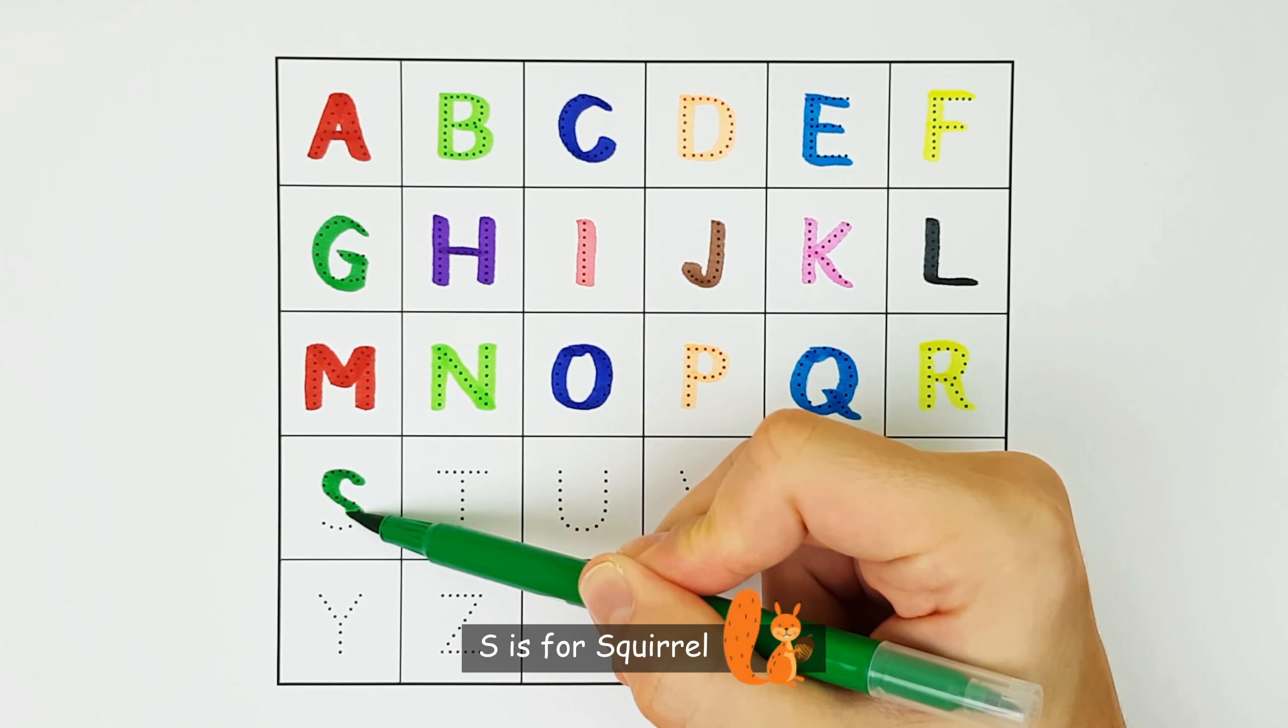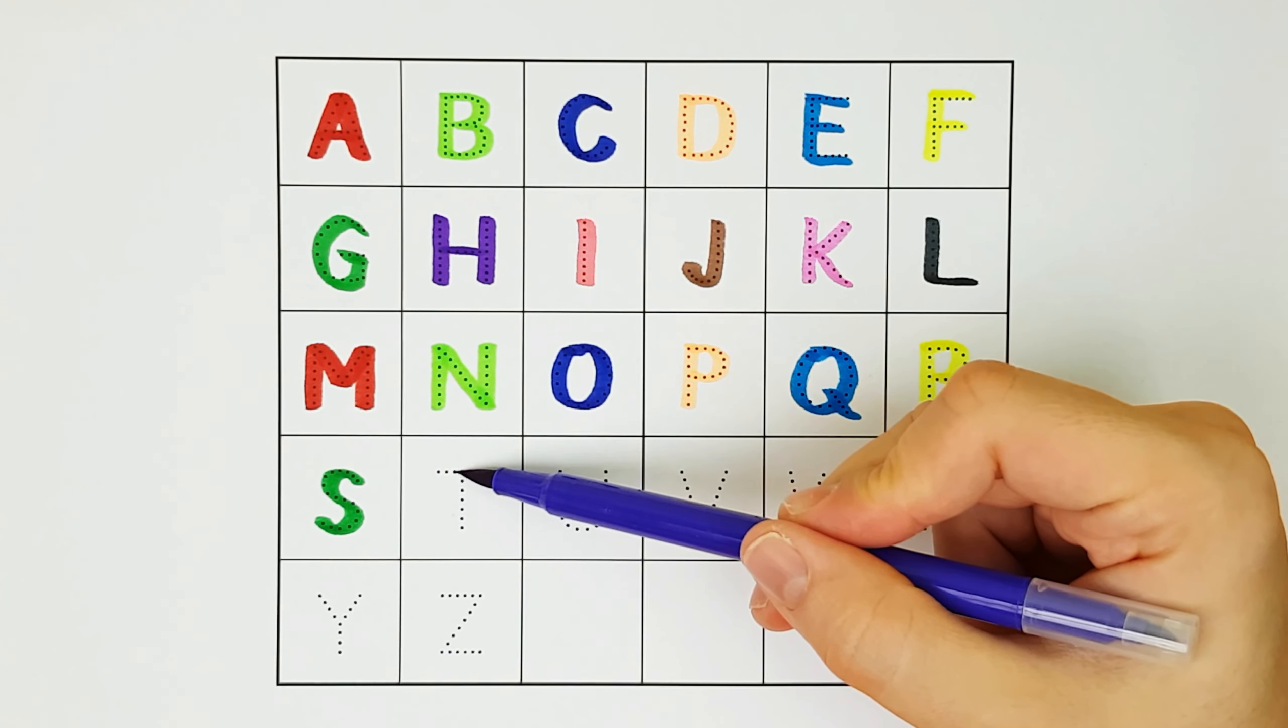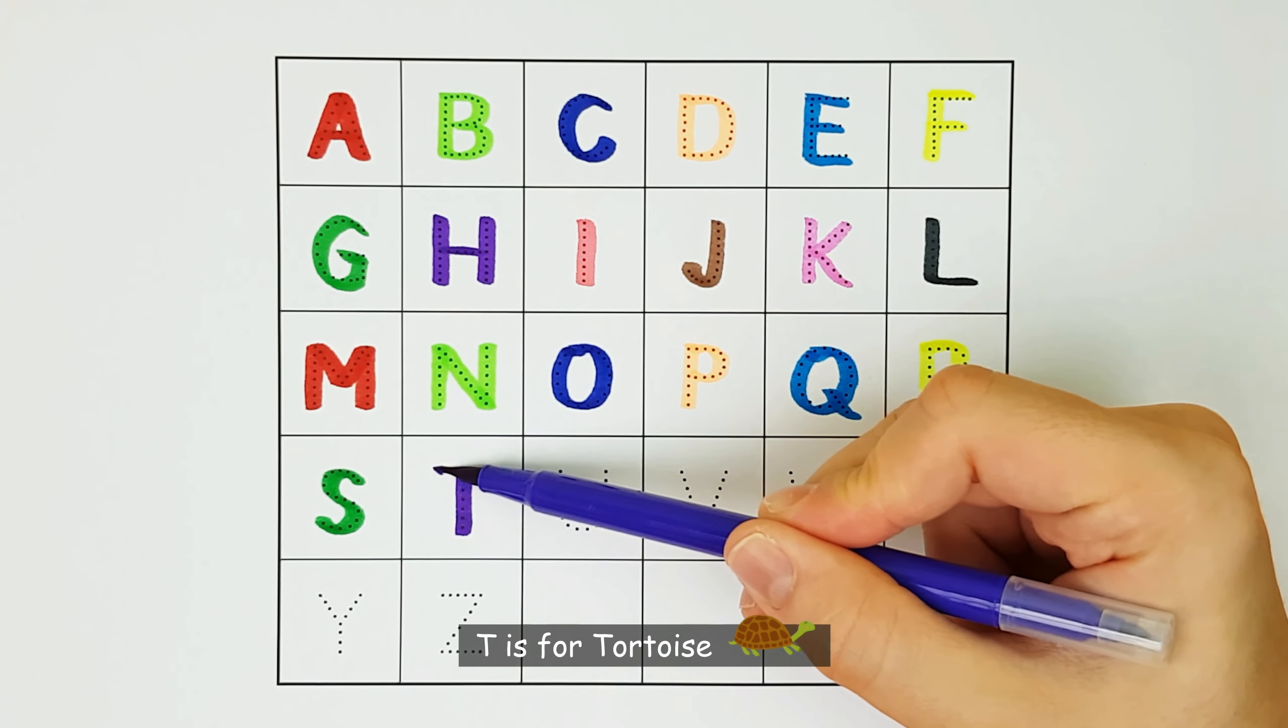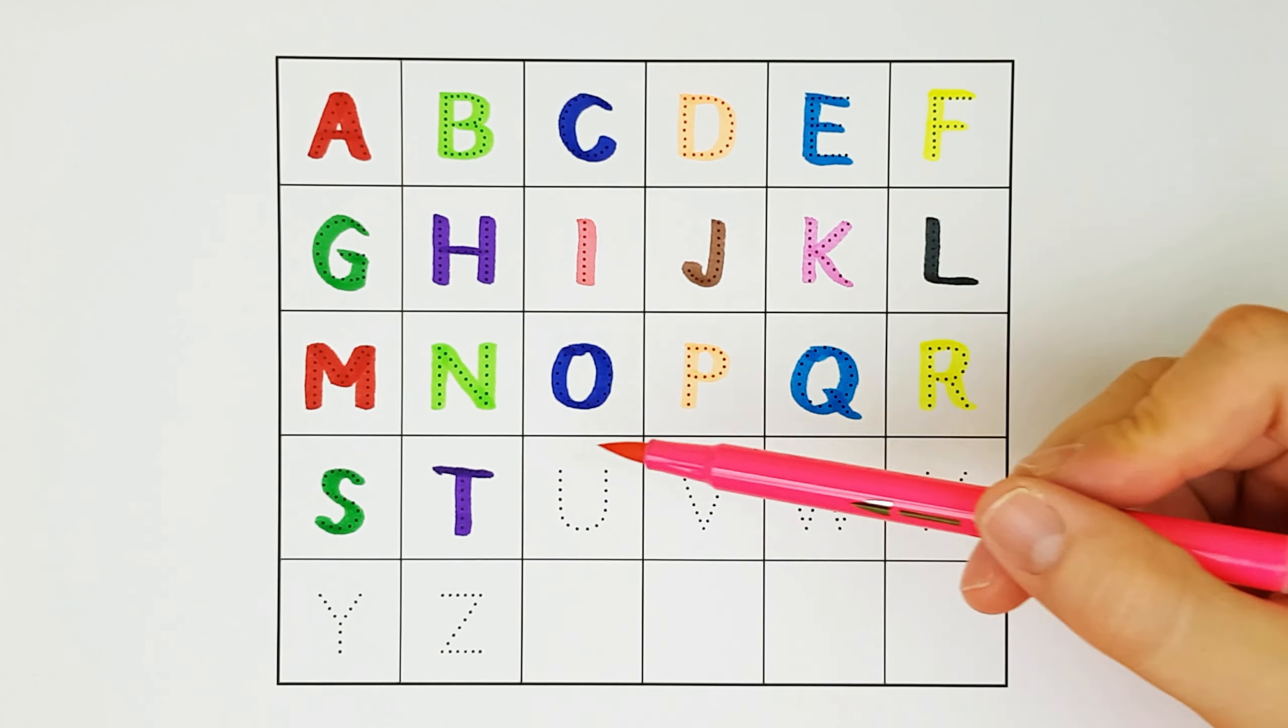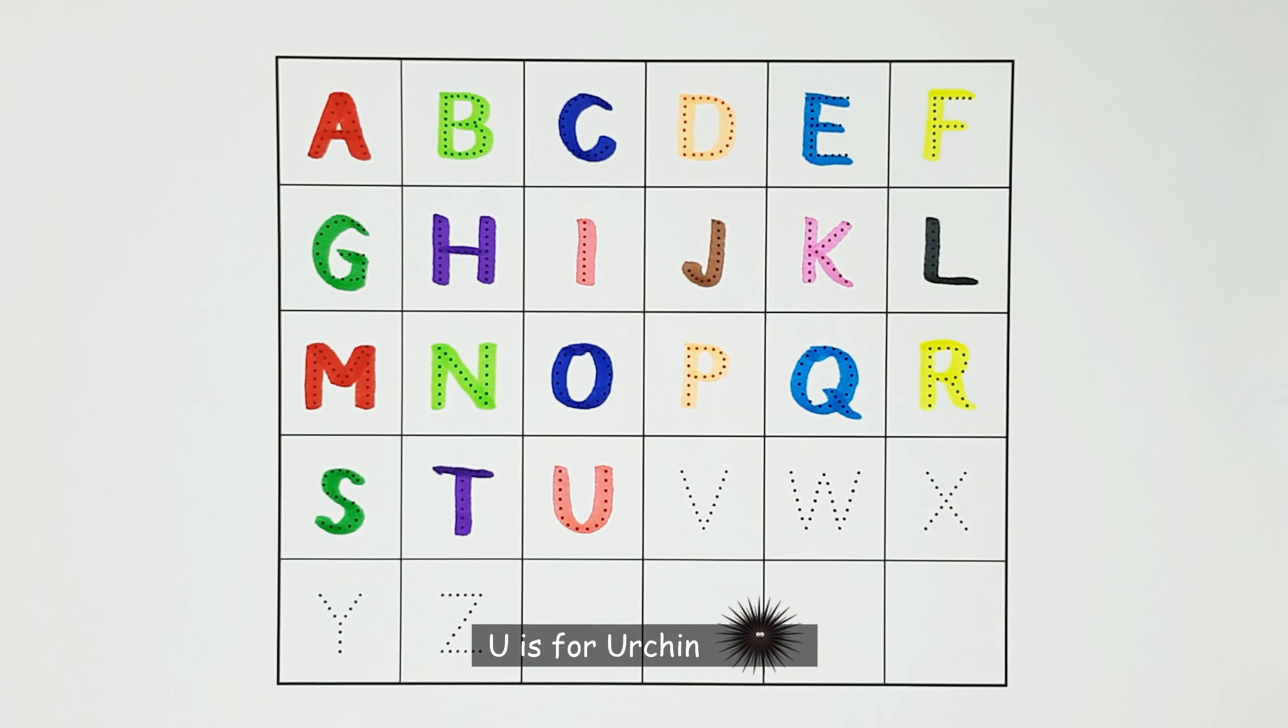S. S is for squirrel. S. T. T is for tortoise. T. U. U is for urchin. U.